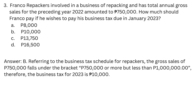Answer: b. Referring to the business tax schedule for repackers, the gross sales of $750,000 falls under the bracket $750,000 or more but less than $1 million. Therefore, the business tax for 2023 is $10,000.